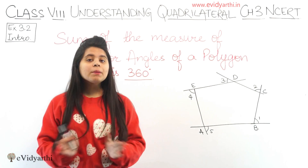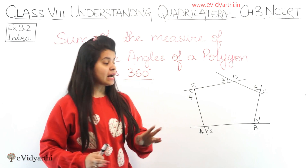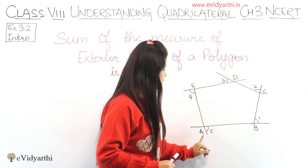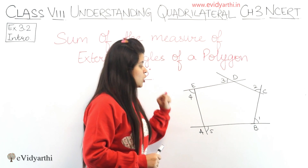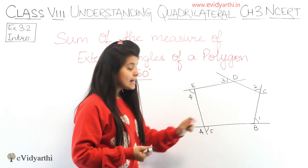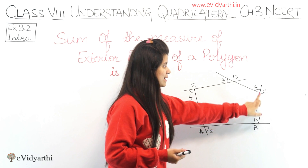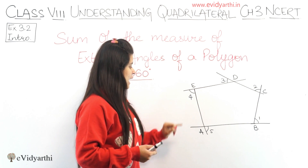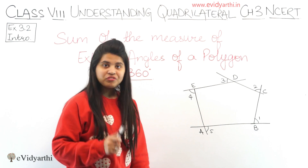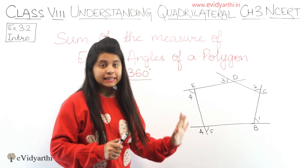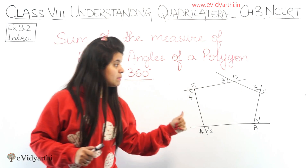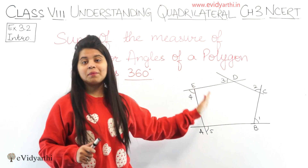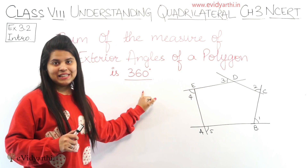Means ki, koi bhi polygon hai, uski jo exterior angles hongi. Exterior angle means — jaise yahan pe ek pentagon hai: A, B, C, D, E. Iski exterior angles kaunsi hain? Angle 1, angle 2, angle 3, angle 4, and angle 5. Ye saare exterior angles hain. So, kisi bhi polygon ki jo exterior angles hongi, unka sum humesha 360 degree hoga.